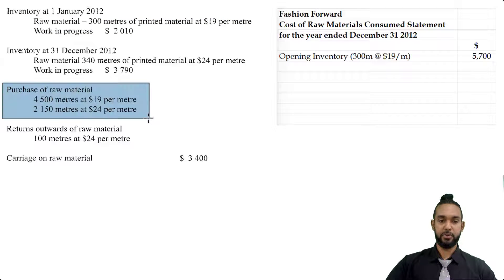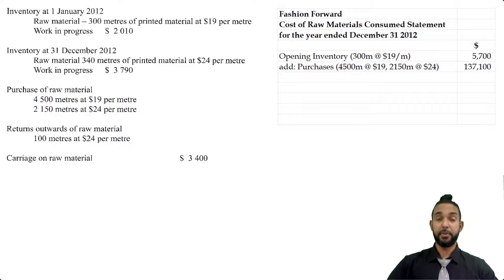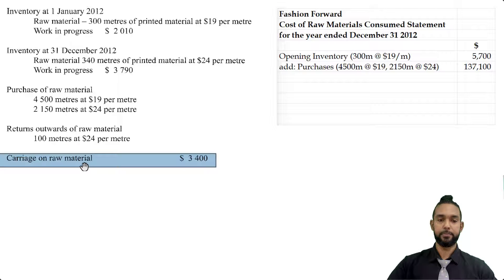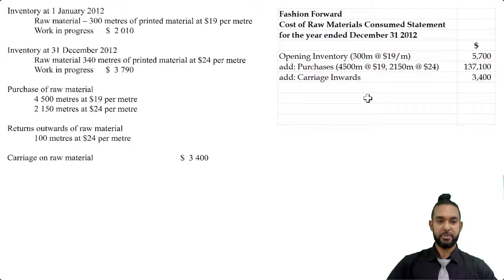The next thing we need is the purchases of raw materials. We have two batches: 4,500 meters at $19 per meter, and 2,150 meters at $24 per meter, so we're going to have to multiply and add. You're going to see the workings — add purchases: 4,500 at 19, and 2,150 at 24 — that total is $137,100. The next thing we add is the carriage on raw materials. It doesn't say carriage in or carriage out, but since it's raw materials we're buying, carriage in is delivery on raw materials, so we add that $3,400 as well — add carriage inwards: $3,400.